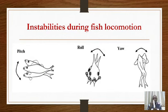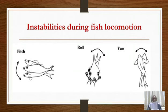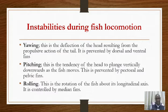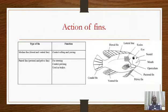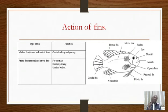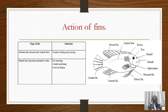The head getting plunged down — that is what we call pitching. Yawing is that side-to-side deflection; pitching is downward plunging of the head. Pitching is controlled by the pectoral and the pelvic fins. So the paired fins — the pectoral and the pelvic — are the ones that control pitching, while yawing is controlled by the dorsal and ventral fins.